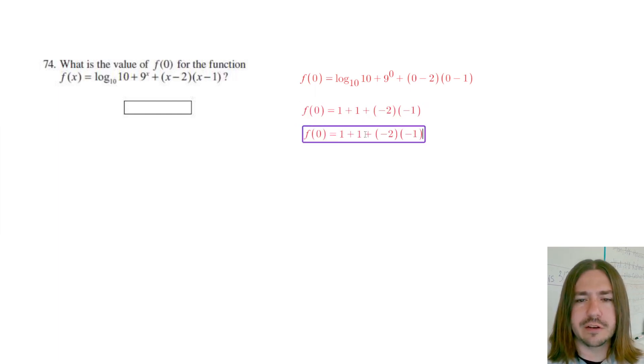We've got negative 2 times negative 1, which is just positive 2. And so we have 1 plus 1 plus 2.